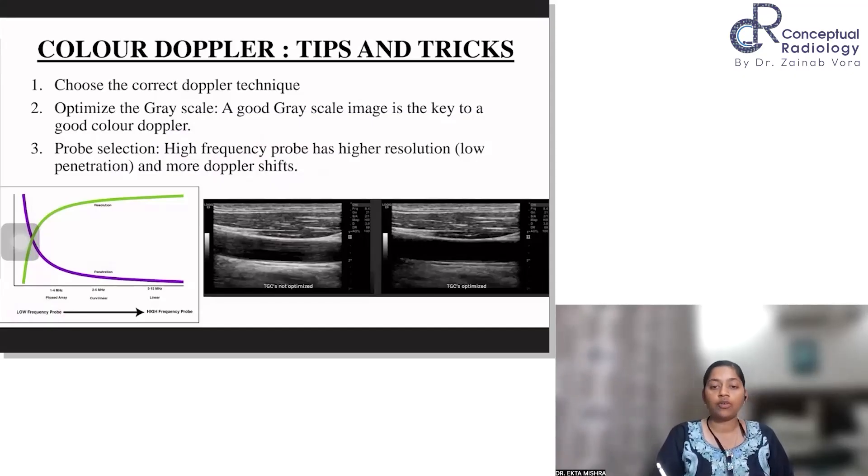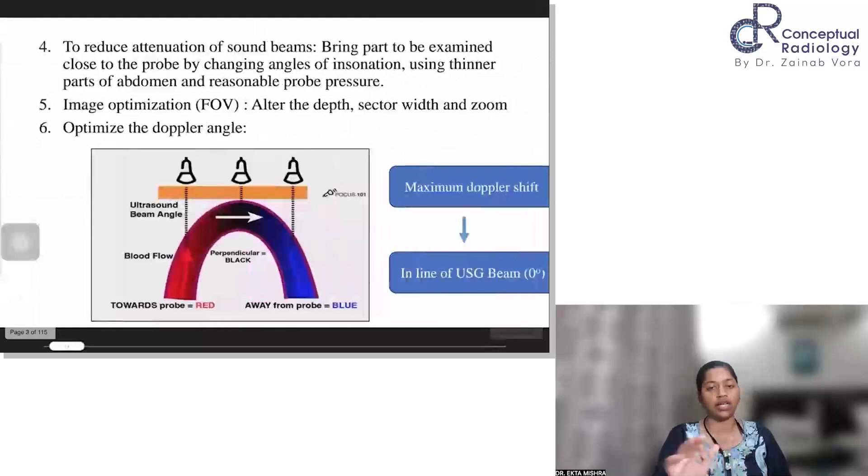So if your grayscale image is not optimized, you will get these shades. Your TGC is not optimized. But when you optimize it, you get a good grayscale image. And once you acquire a good grayscale image, you have confidence in the anatomy of that structure. And after that, putting color and spectral Doppler will give you a better result. So remember to optimize your grayscale image first.